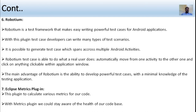Robolectric (Robot Team) is a test framework that makes it easy to write powerful test cases for Android applications. The developer can write many types of test scenarios, and it is possible to generate test cases that span across multiple Android activities. The test case is able to automatically move from one activity to another and click anything clickable within the application window. The main advantage is the ability to develop powerful test cases with minimal knowledge of the testing application.